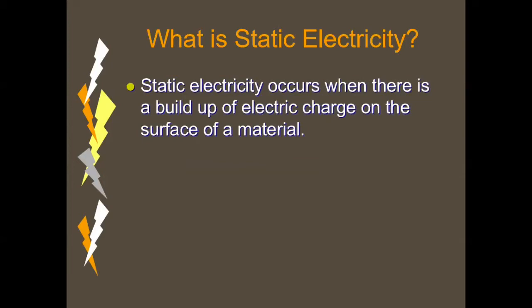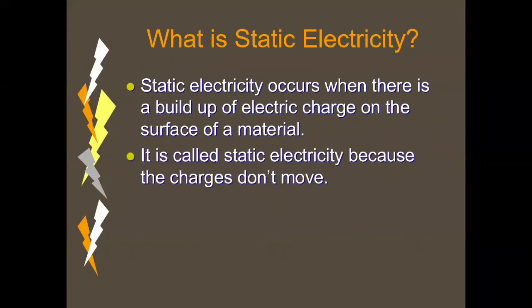When we consider this as a material and associate it with electricity, we know that this is not restricted to conductors only, but it can also take place in insulators. Insulators such as plastic, rubber, cloth, and conductors such as any metal surface. It is called static electricity because the charges don't move.